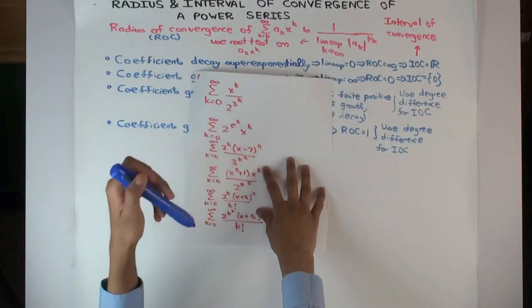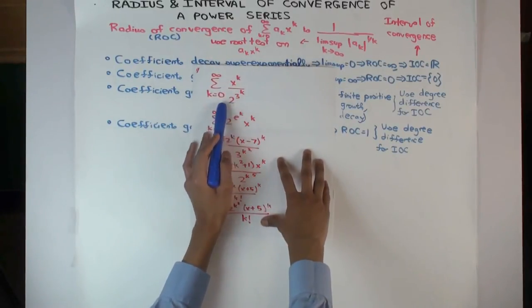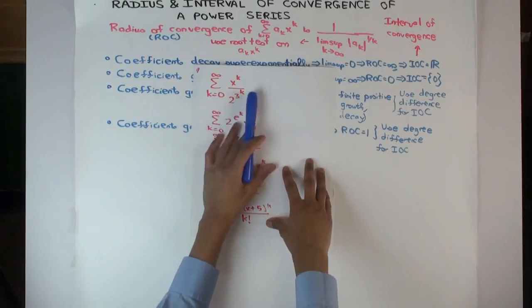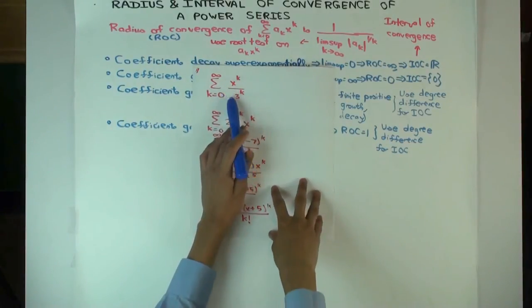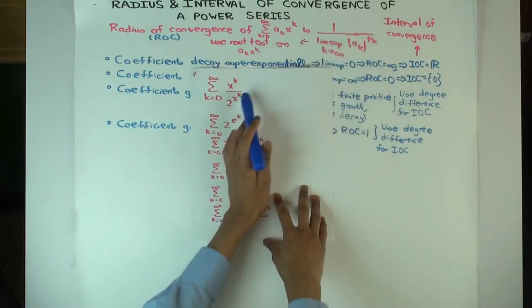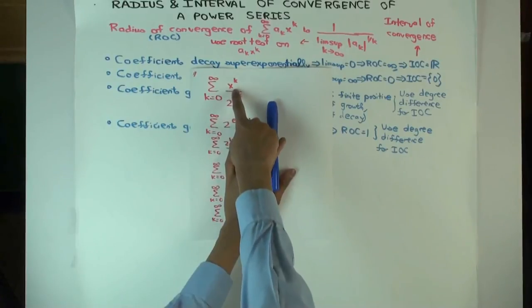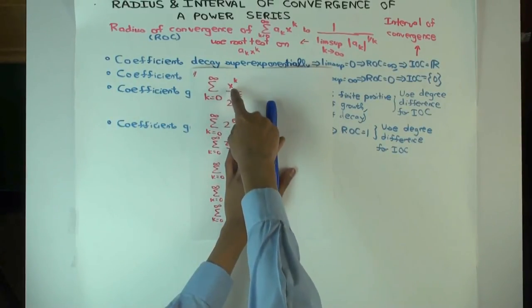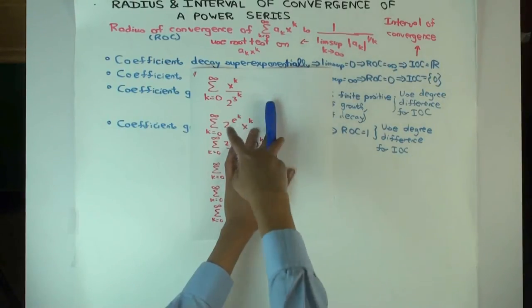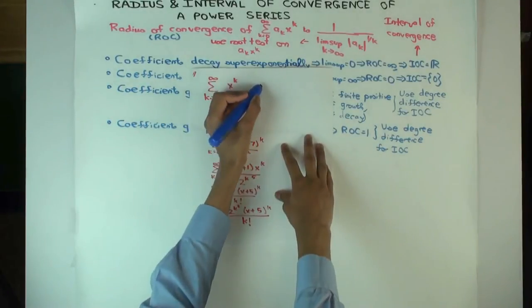In all cases, look at the coefficient as a function of k and figure out whether it's superexponential growth or decay. For the first example, the denominator is double exponential — so it's in the denominator, giving superexponential decay. The coefficients go down really fast, meaning the LIMSUP goes to zero, so the radius of convergence is infinite and the interval of convergence is all of ℝ. For the second example, the coefficient is double exponential growth — the LIMSUP is infinite, so the interval of convergence is just the single point zero.